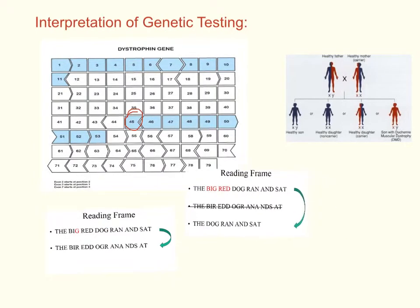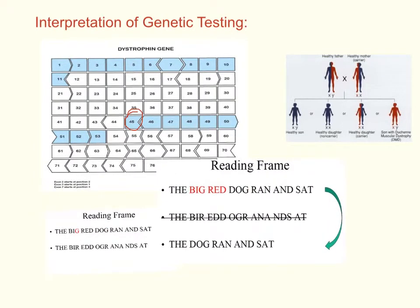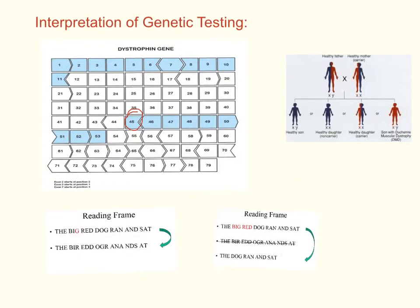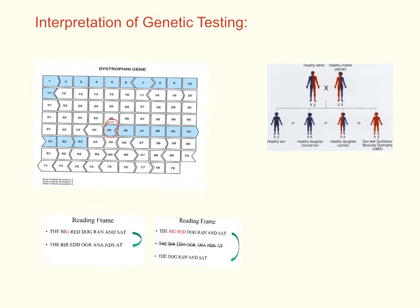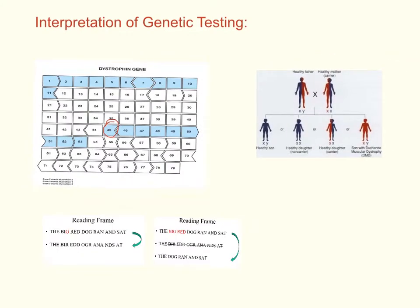On the other hand, if the words 'big' and 'red' were deleted, the new sentence — 'the dog ran and sat' — would still make sense, and this is an in-frame deletion. Like this, protein function is severely diminished with out-of-frame deletions as compared to in-frame deletions. The out-of-frame deletion of exon 45 greatly impacts the function of the dystrophin protein in Patient X, leading to Duchenne's muscular dystrophy.